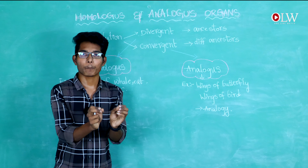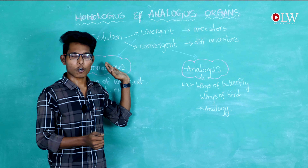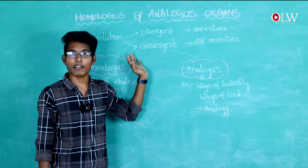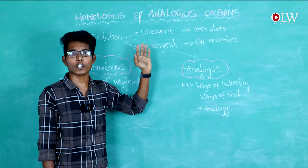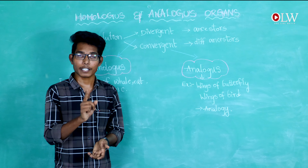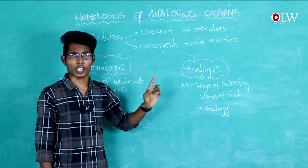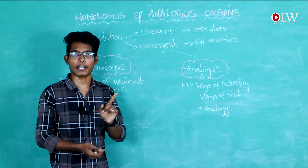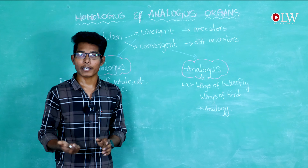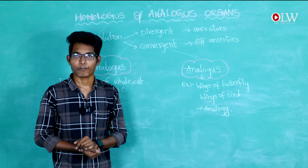These examples of organisms living in a particular habitat illustrate analogous organs. Homologous and analogous organs are the basic anatomical evidences of evolutionary change. In the next video, we will discuss atavistic organs and vestigial organs. Thank you.